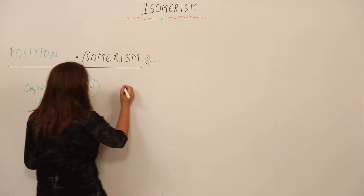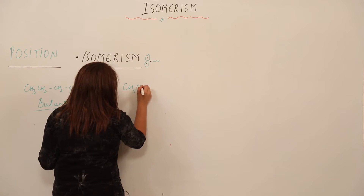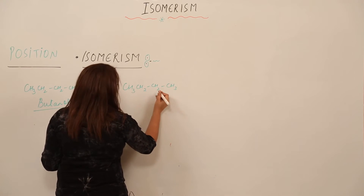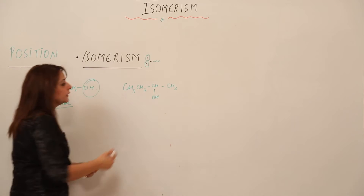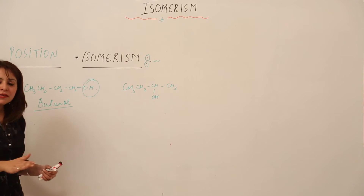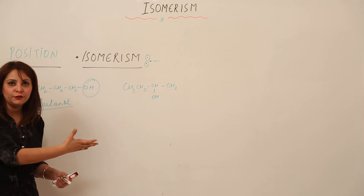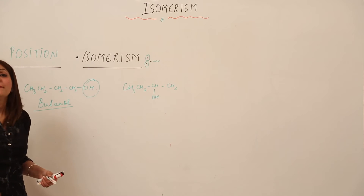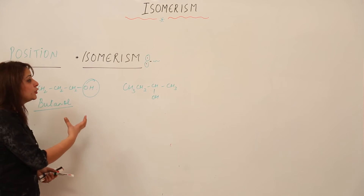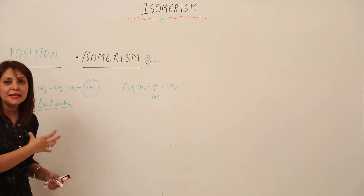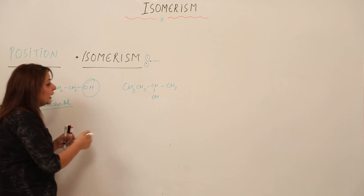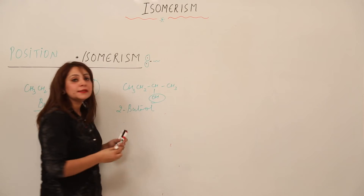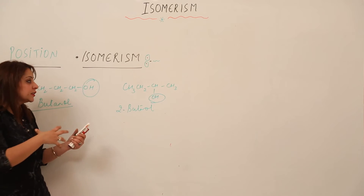Now what is the name for this compound? Again it has four carbon atoms, same as before. It also possesses one OH group, just as before. But the difference is that they differ in properties — it was earlier butanol, but now it has become 2-butanol because the alcohol group is now at the second position.